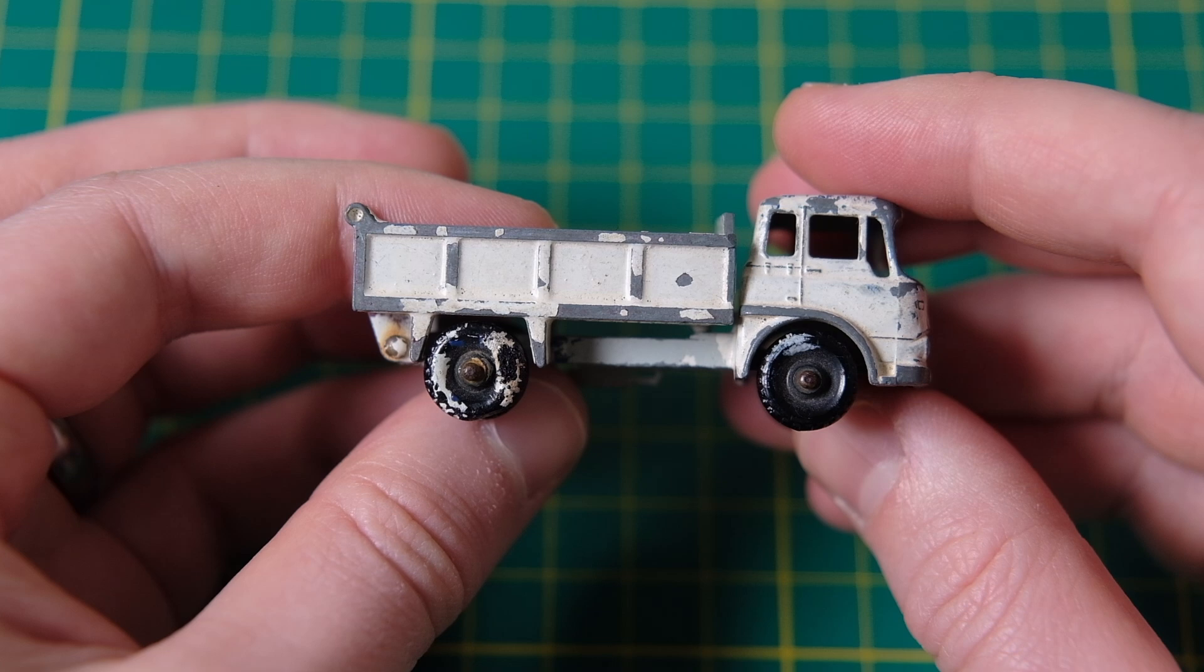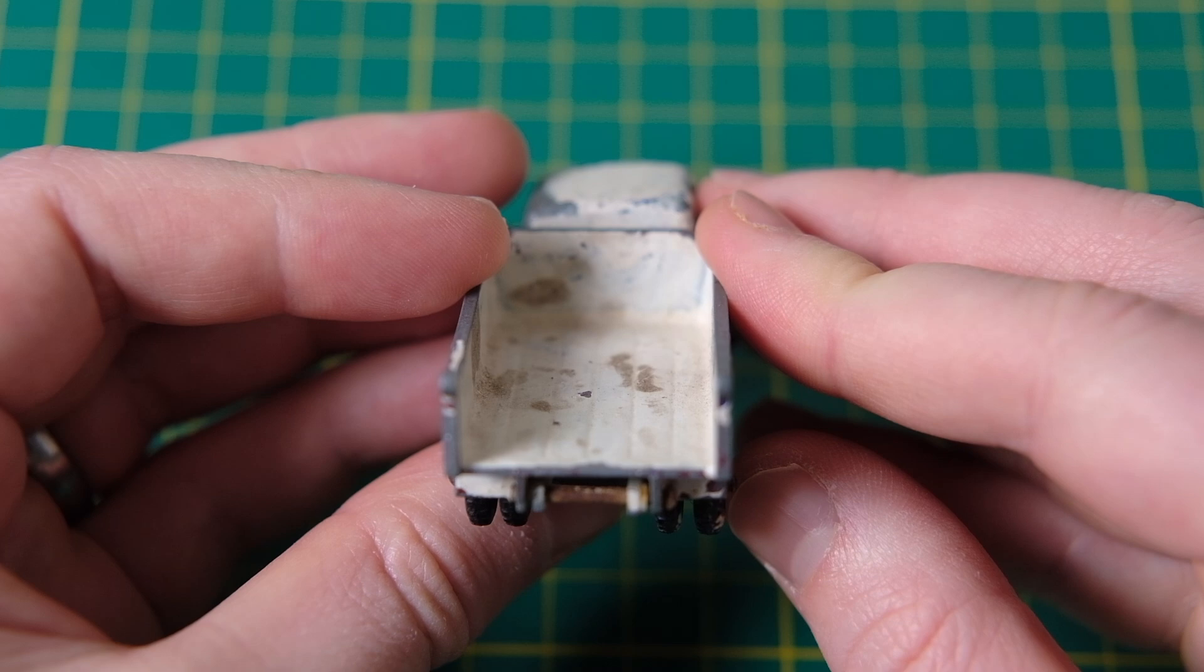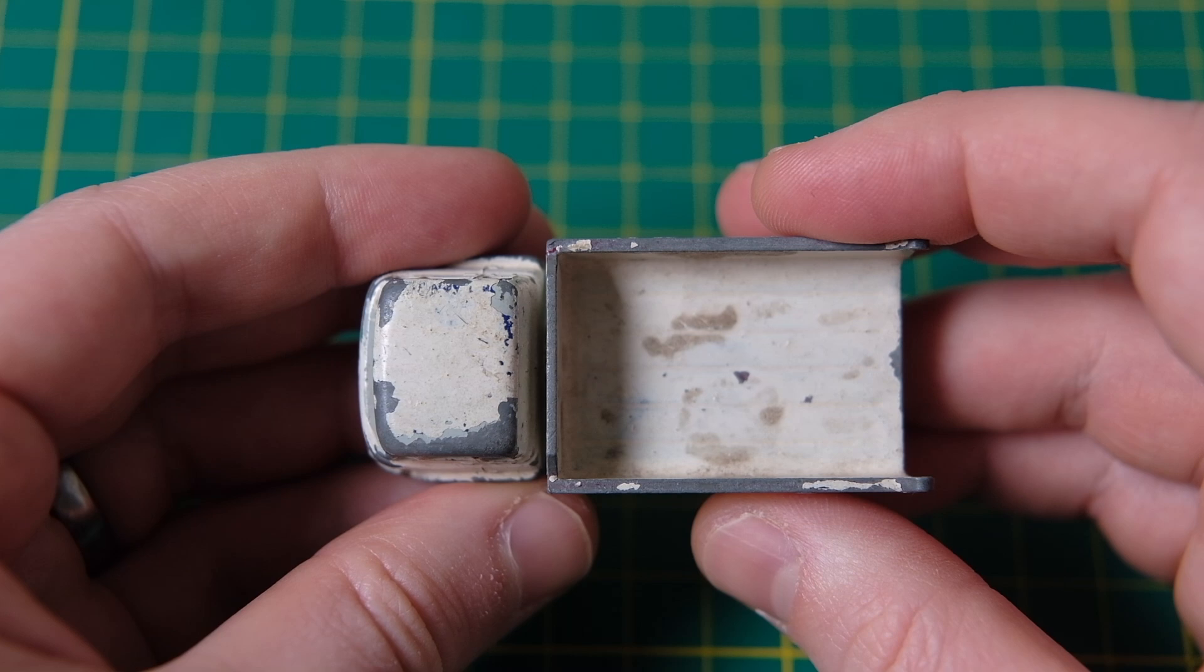Hello and welcome to Diecast Restos. My name is Jason and this is the Matchbox 3B Bedford seven and a half ton tipper produced by Lesney between 1961 and 1967.